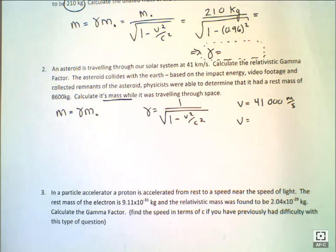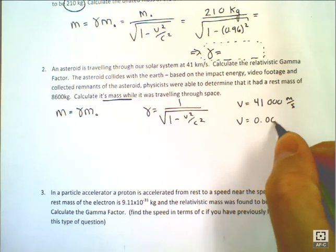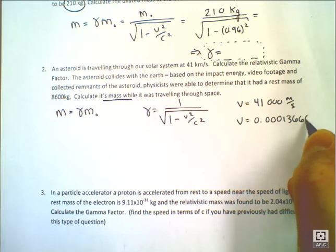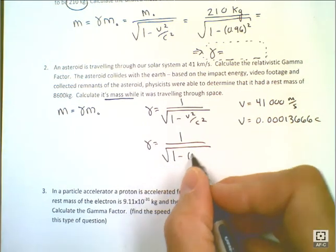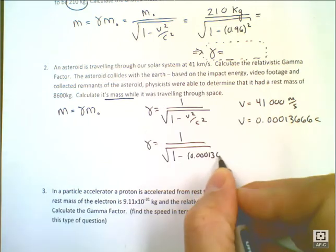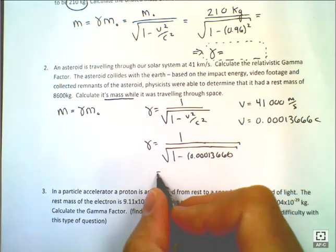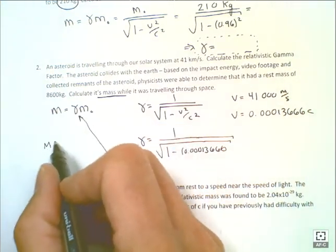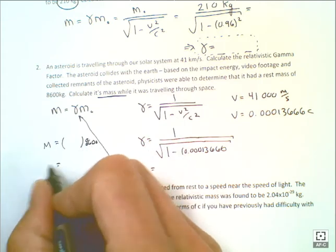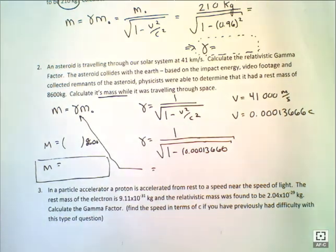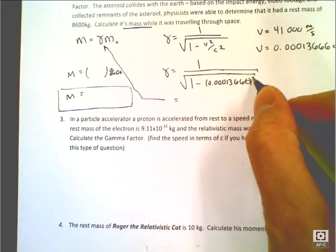You get a very, very small number. That's a percentage of C. And then we can figure out our gamma factor, which is going to be extremely small. Once you get your gamma factor, we can simply put it into our equation here and multiply it by the 8,600 and get our final solution. That should be squared.